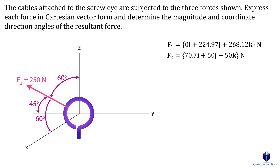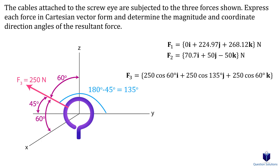Now for force F3 — it's pretty similar to before. The key issue is the angle between the force and the Y axis. The coordinate direction angle must be measured with respect to the positive X, Y, and Z axes. For F3, the angle given with respect to the Y axis is between the negative Y axis and the force, so we subtract 45 degrees from 180 degrees to get the angle between the positive Y axis and the force. Everything else is the same. Notice our J component is negative, which makes sense since the Y component of F3 is along the negative Y axis.